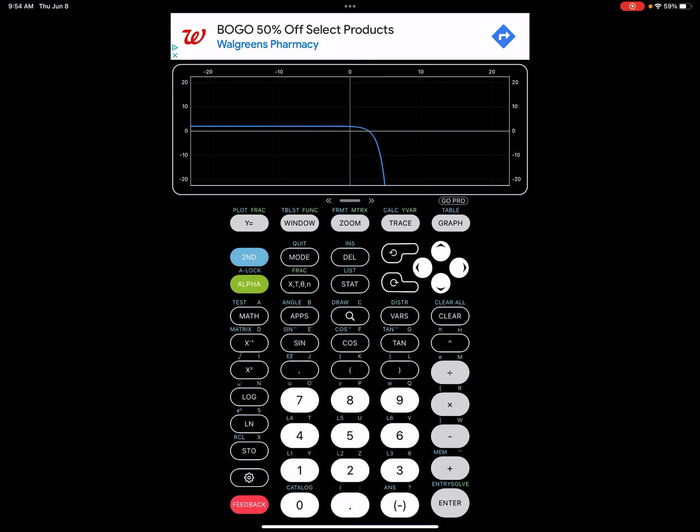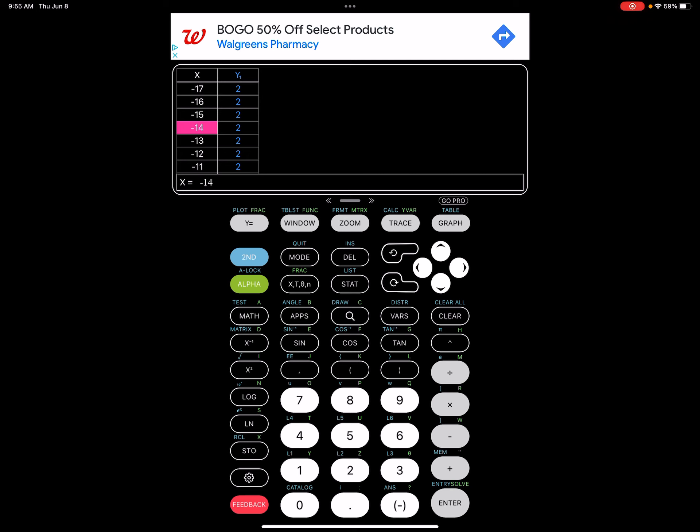And then you're going to press second graph for the table. So what we're going to do is plot points that I can fit on the graph. And so I see 2 is 1, 3 is negative 1, 4 is negative 7.